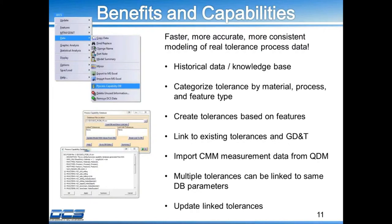We can create tolerances on features, on points, and they're automatically created once we highlight the feature or point you'd like to create a tolerance on. You'll see a demo of how to do that. We can link existing tolerances and existing GD&T to this database. There's just a new button at the bottom of each of our tolerances that has a link to the database option, and then it'll take you to the database and you can select which one you want to link.